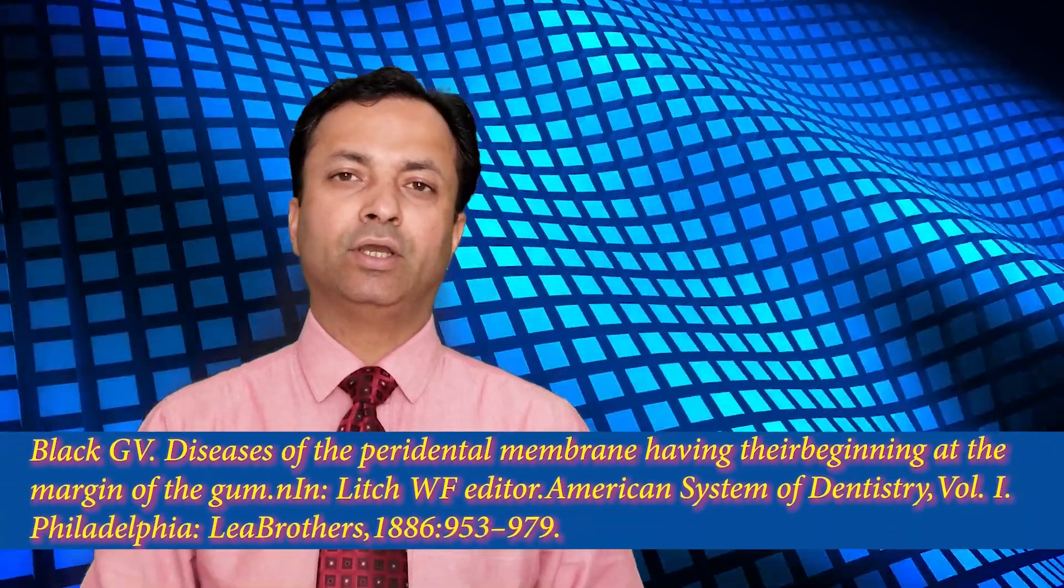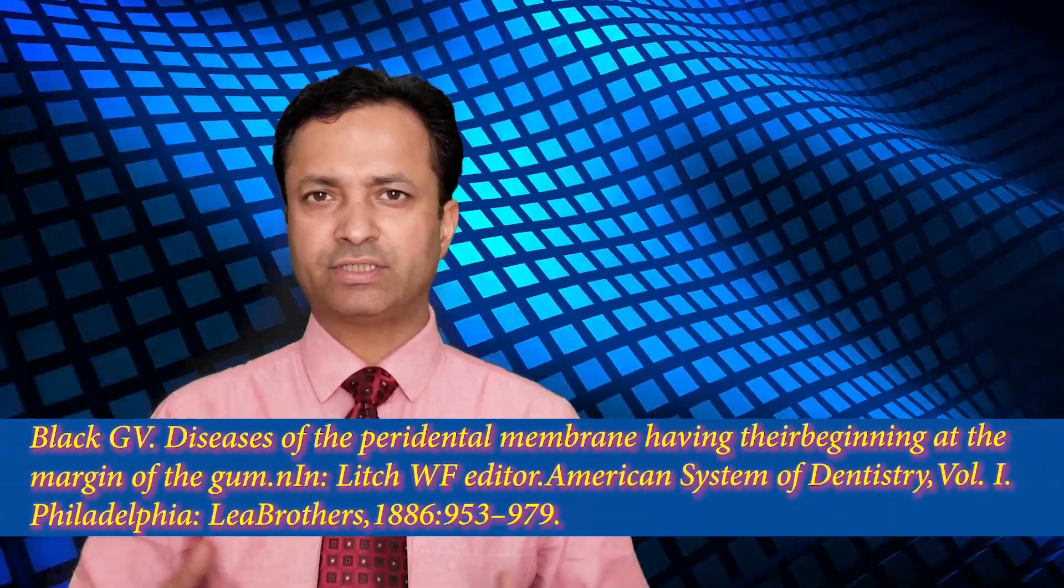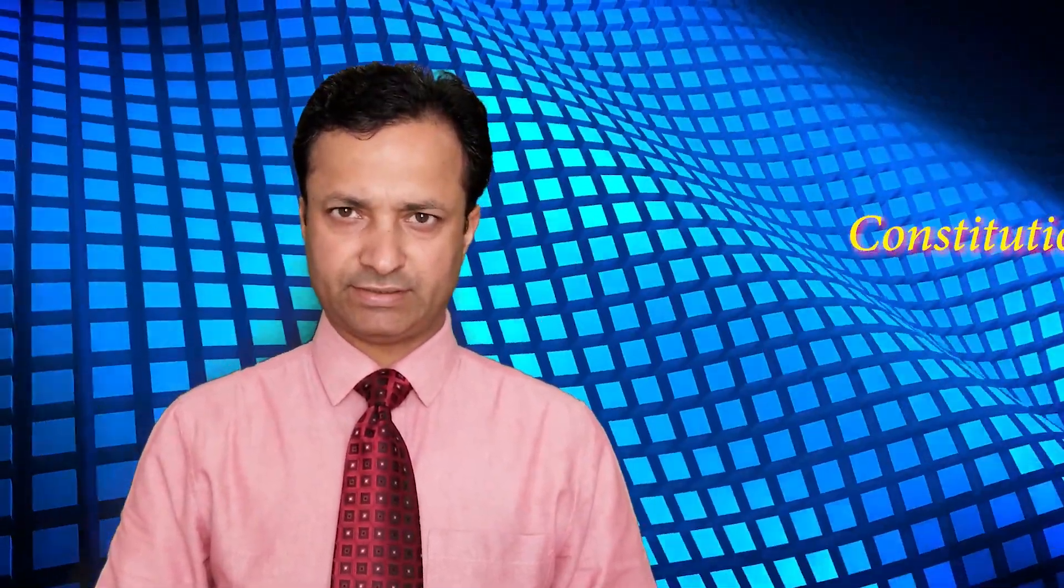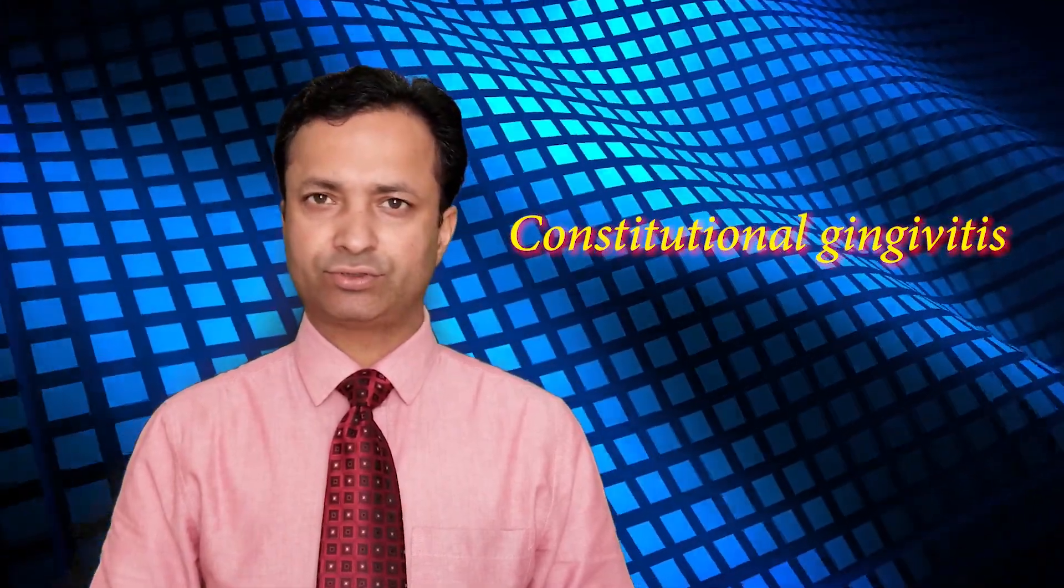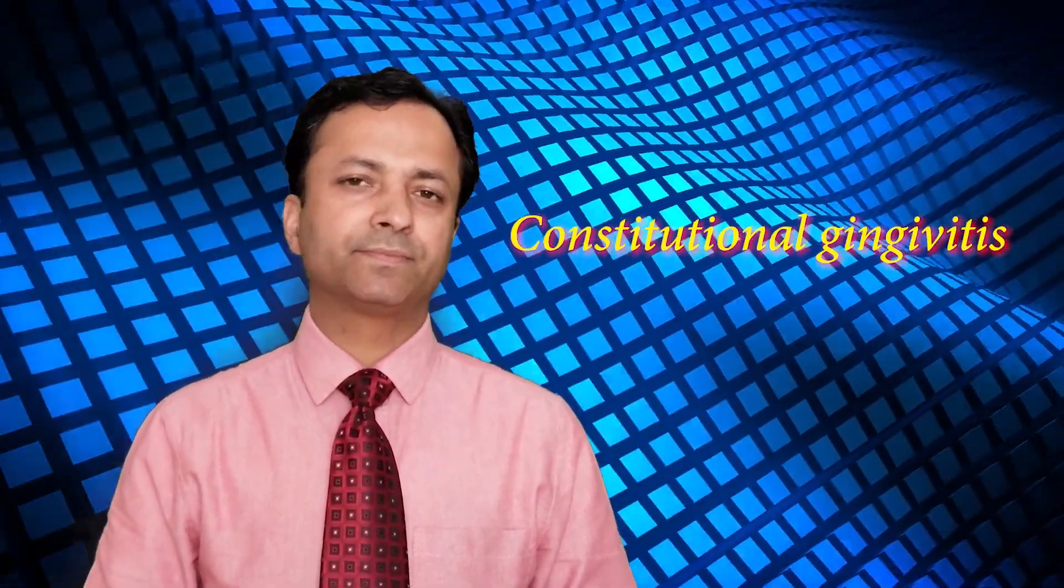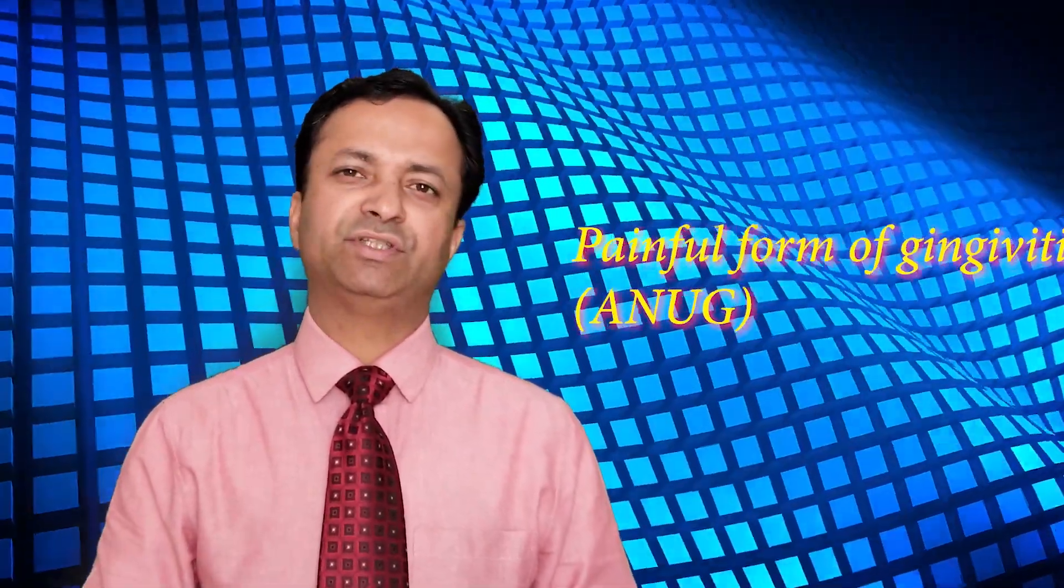Another classification system was given by Dr. G.D. Black in 1886 where he classified the periodontal diseases into five categories. The first category included constitutional gingivitis. In this category he included gingivitis caused due to scurvy and similar causes. The second category included a painful form of gingivitis which is equivalent to acute necrotizing ulcerative gingivitis in today's terminologies.